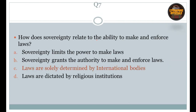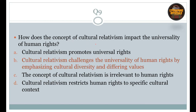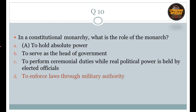Question number 7: How does sovereignty relate to the ability to make and enforce laws? Right option is C: laws are solely determined by international bodies. Question number 8: What role do non-government organizations (NGOs) play in shaping the concept of global citizenship? Right option is C: NGOs promote global citizenship by fostering international cooperation and addressing global issues. Question number 9: How does cultural relativism impact the universality of human rights? Right option is B: cultural relativism challenges the universality of human rights by emphasizing cultural diversity and differing values. Question number 10: In a constitutional monarchy, what is the role of the monarch? It is to enforce the laws through military authority.